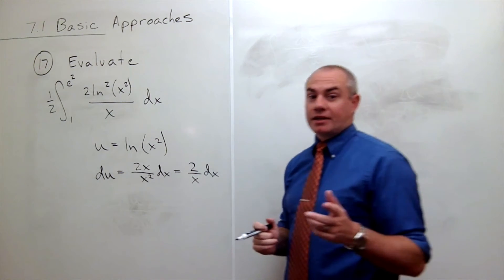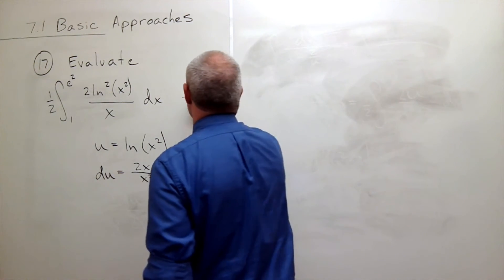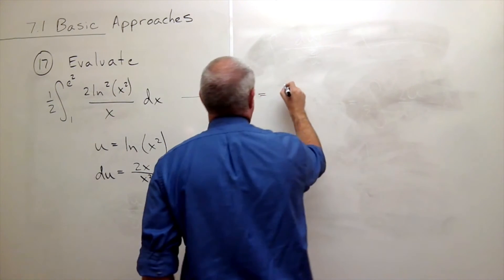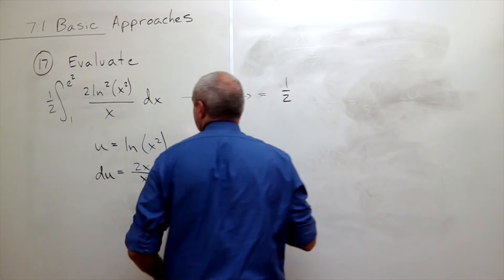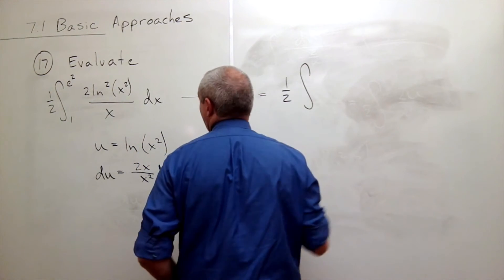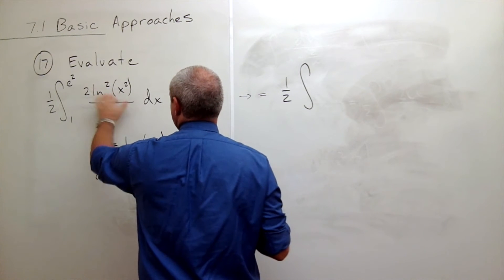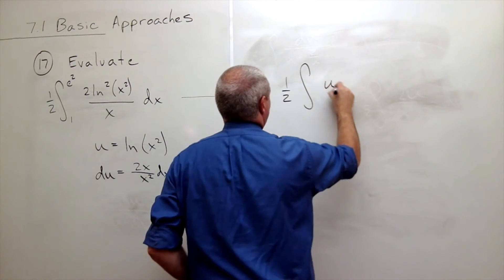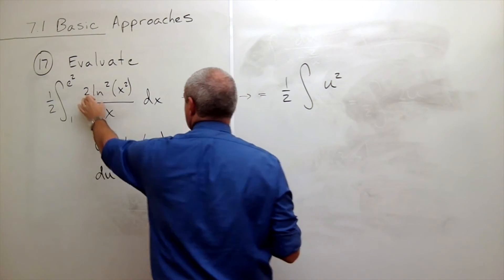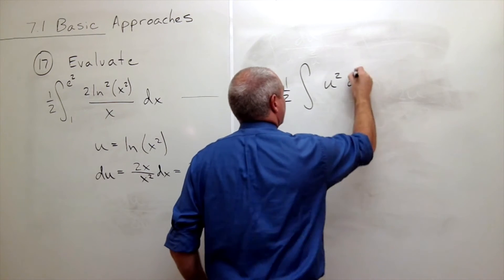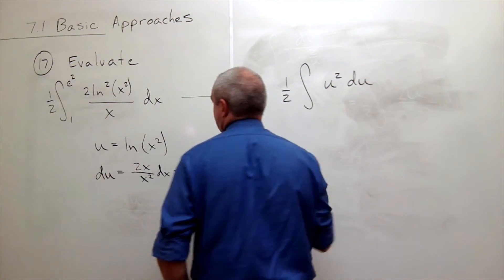Alright, now let's rewrite this thing using the substitution. So I'm going to move over here. This is equal to the 1 half is still there. Then I have the integral of, well ln of x squared was my u. So if I square that, I get u squared. And now the 2 over x dx becomes my du. So I have u squared du.